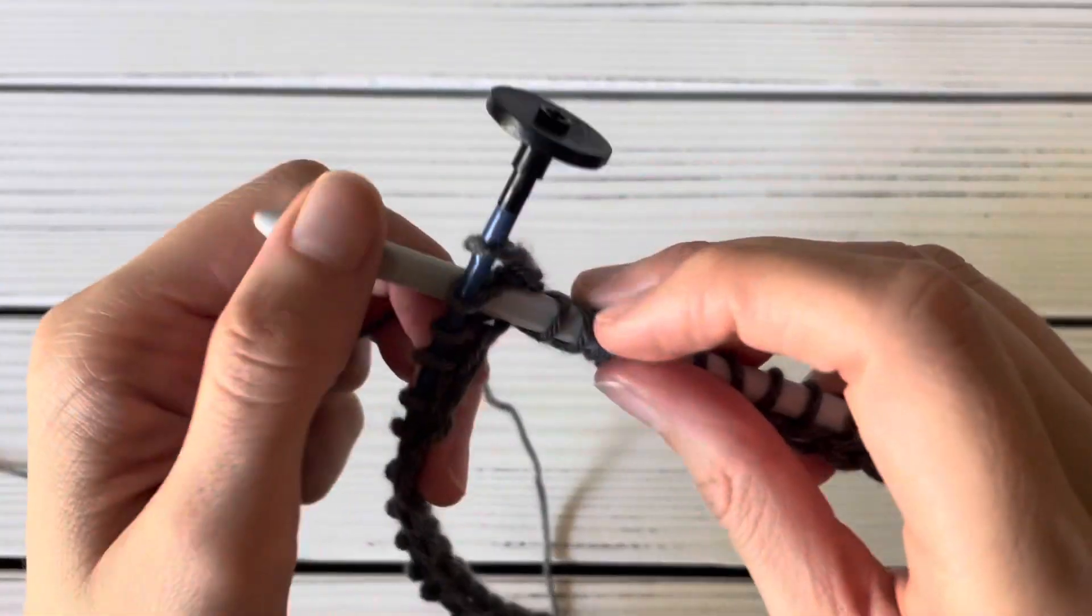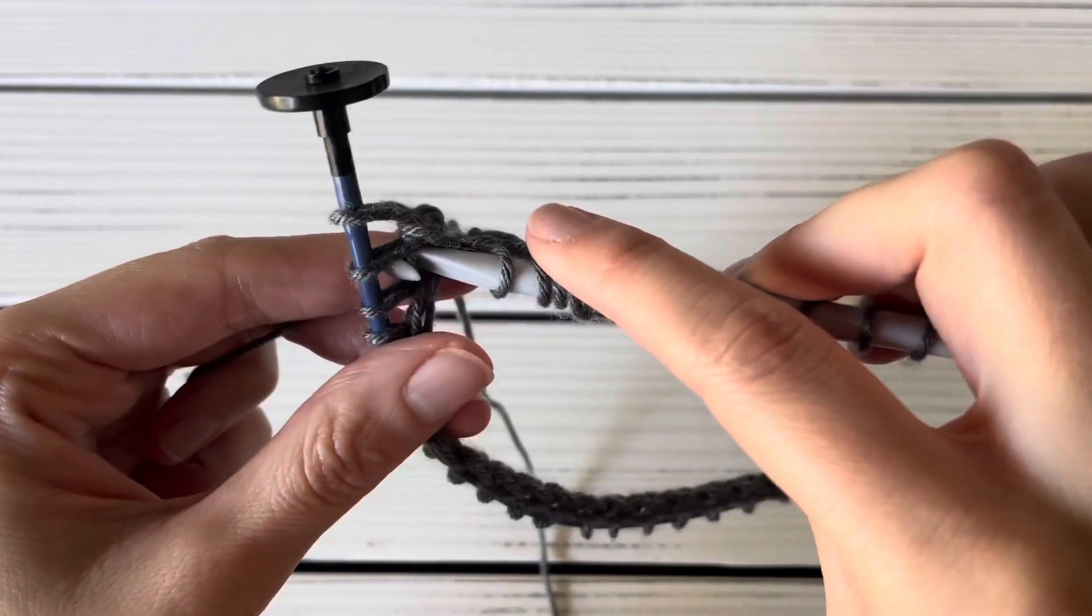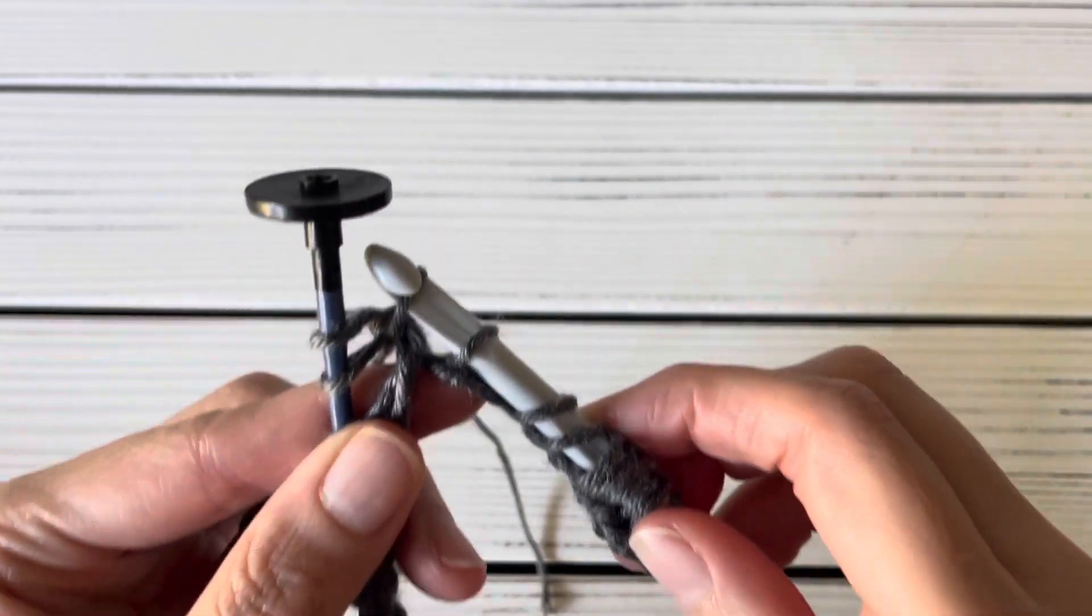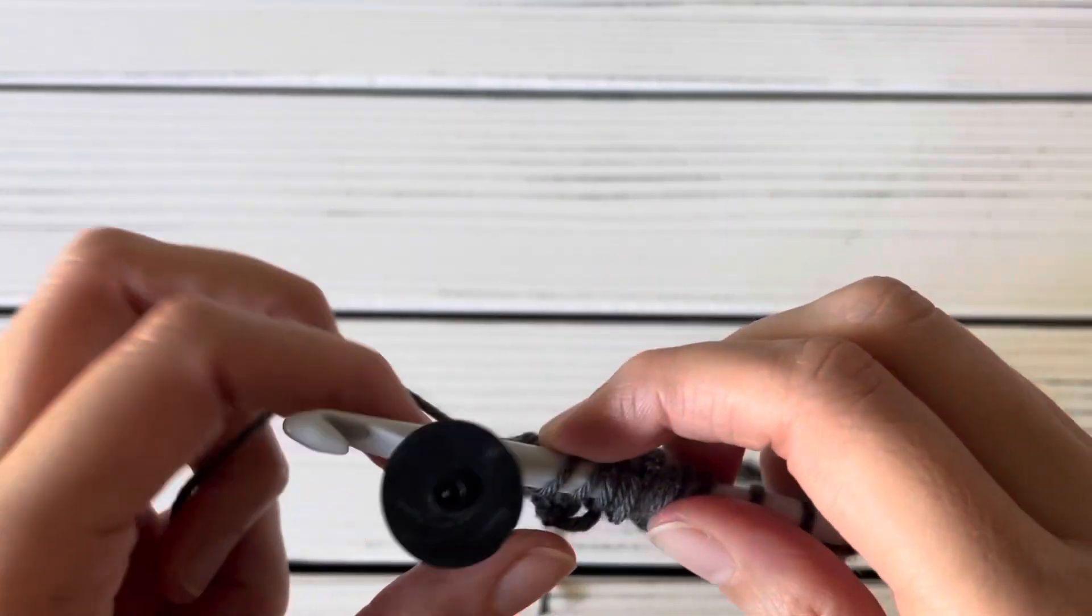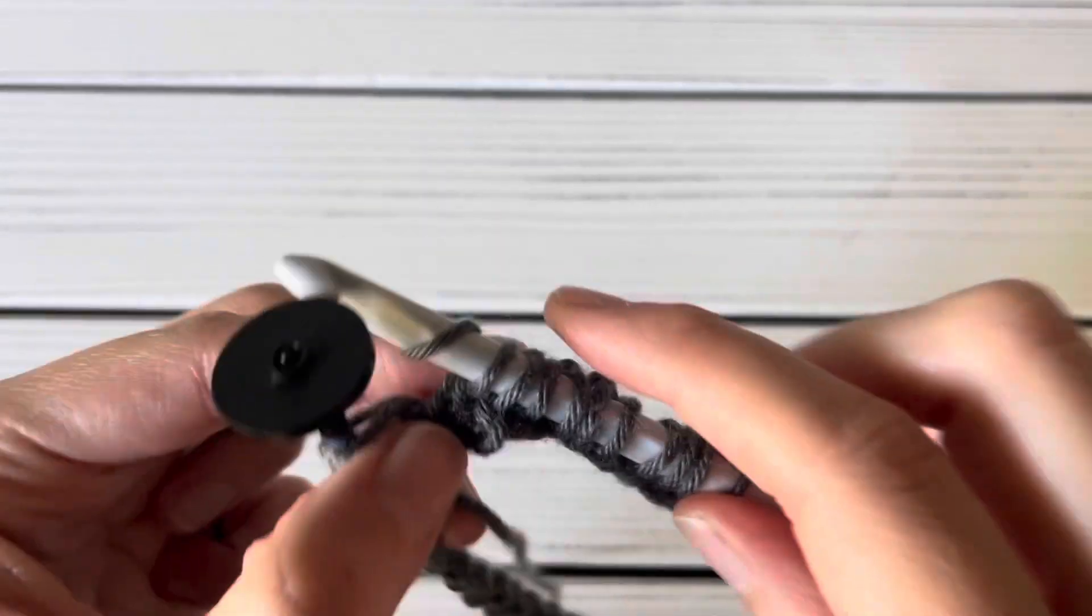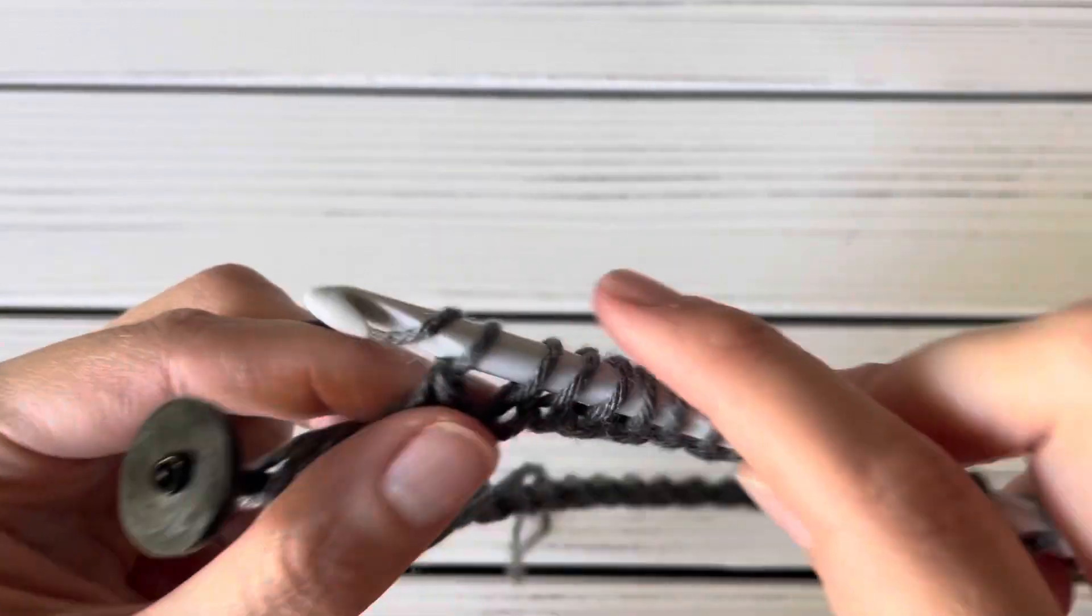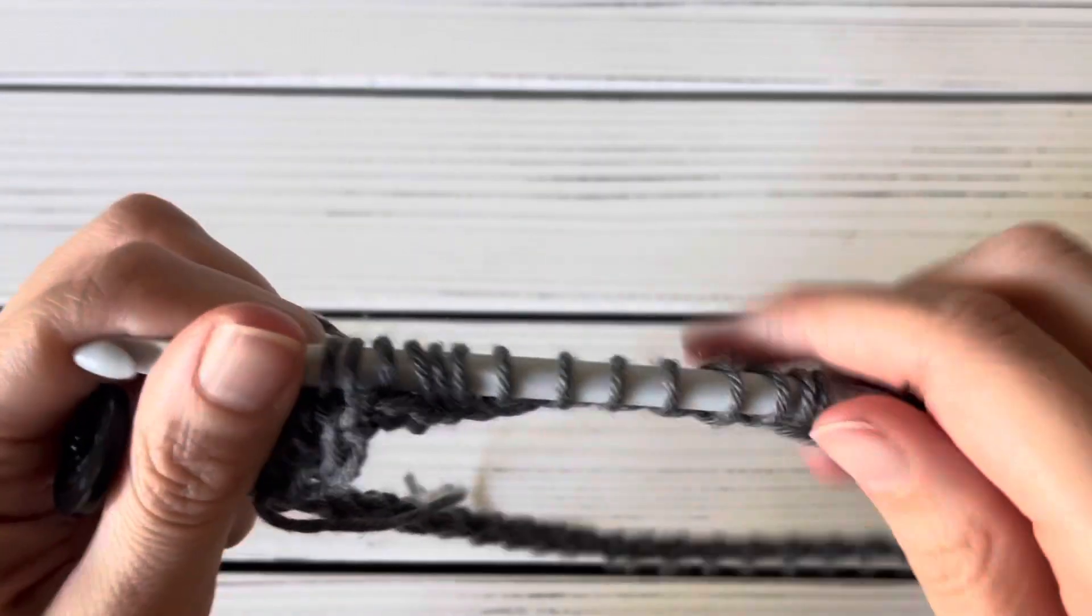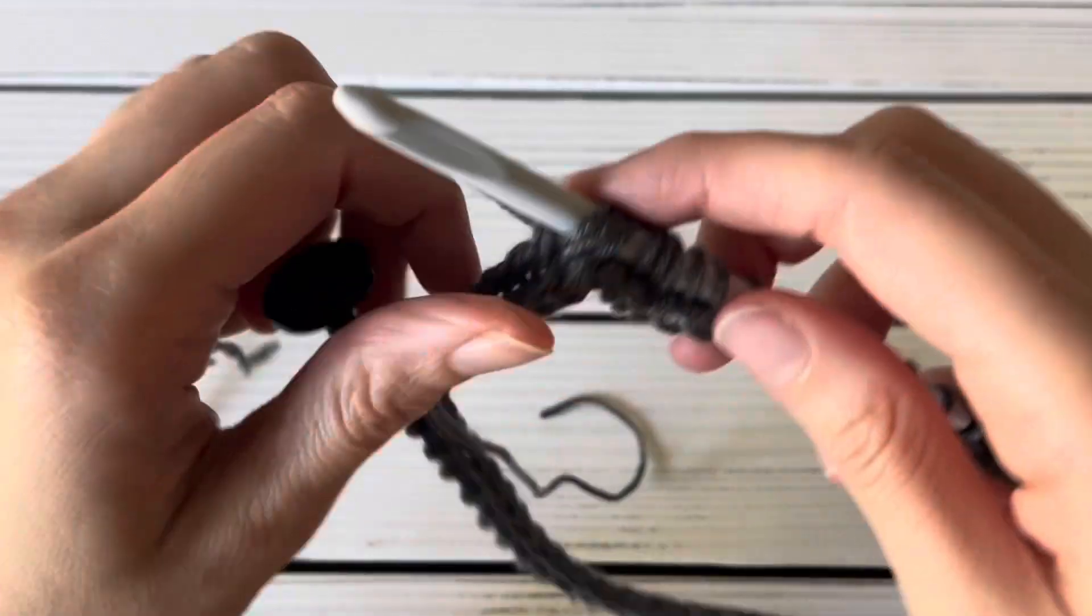Yarn over, pull up a loop, and now we can start the return pass by repeatedly yarning over and pulling through two all the way around. So yarn over, pull through two, yarn over, pull through two, yarn over, pull through two.